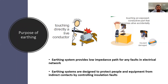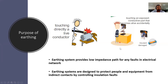As shown in these pictures, a person directly in contact with live parts will get a shock. Similarly, when a conductor's insulation fails, the live conductor touches the equipment body. Any person who then comes into contact with that equipment will also receive a shock.